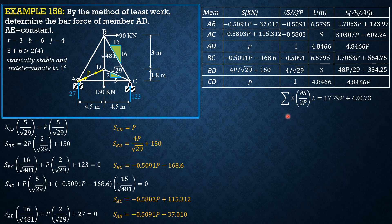So the internal work done, because this is least work, summation of S partial of S with respect to P length over AE is 0, because AD is an internal force. So remember the principle in statics or in dynamics that the work done by an internal force is 0.